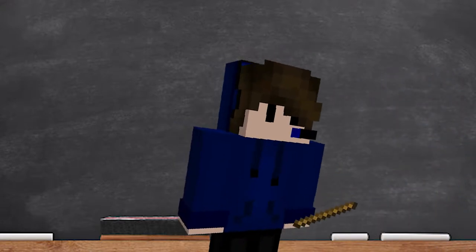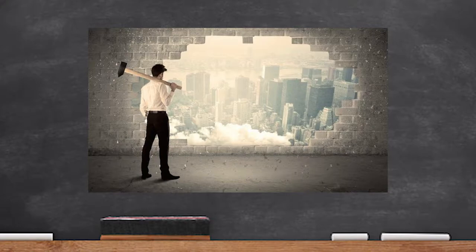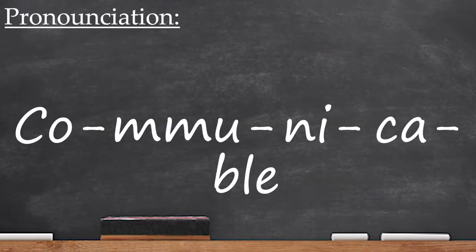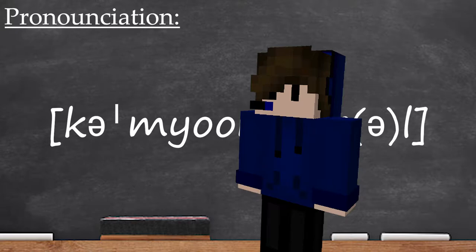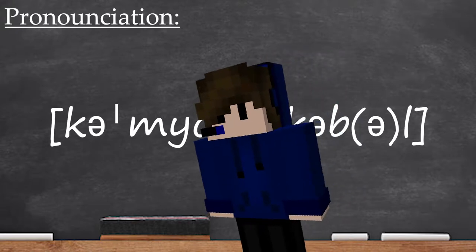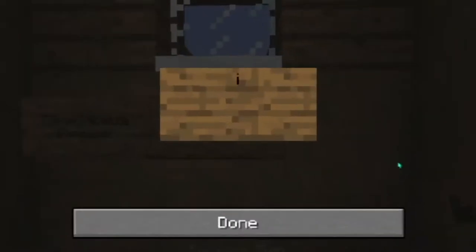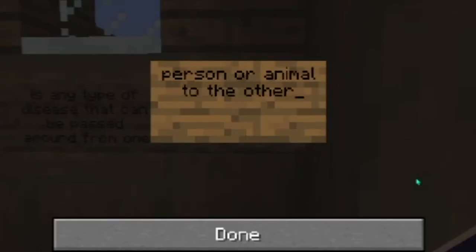You know what that thing is? It's a communicable disease. So let's break down this term. Here's the pronunciation: communicable disease — not 'communicable,' communicable. A communicable disease is any type of disease that can be passed from one person or animal to another.